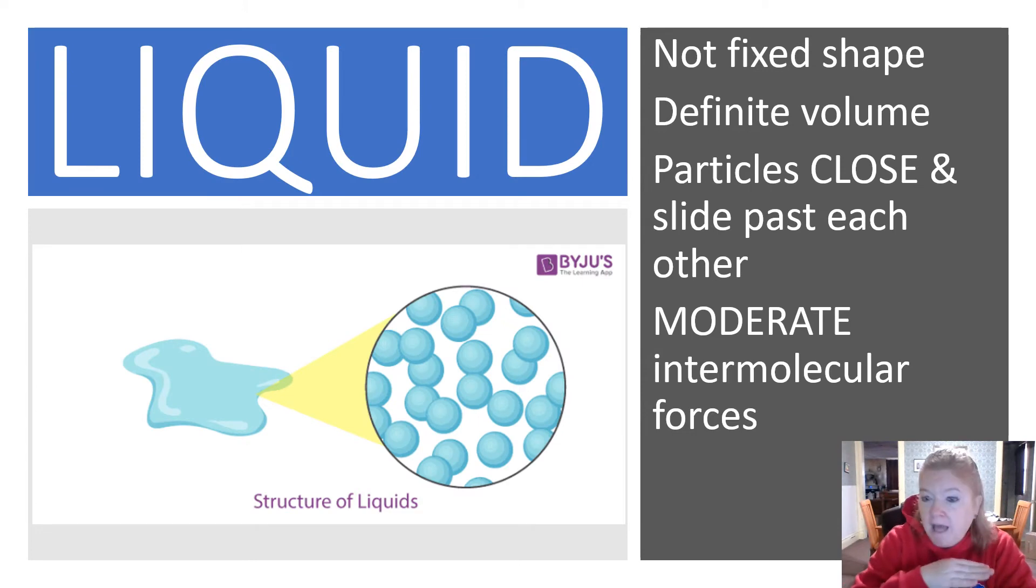Liquid. Not fixed shape, but a definite volume. So a liquid is going to take the shape of its container. The particles are close together, but they can slide past each other easily. And there are moderate intermolecular forces.